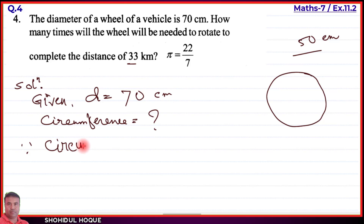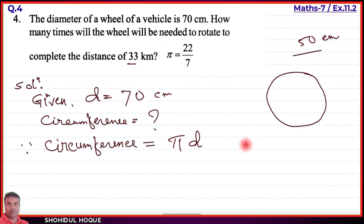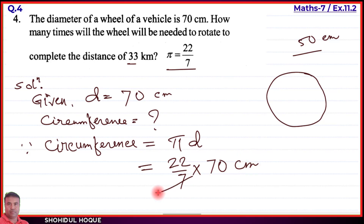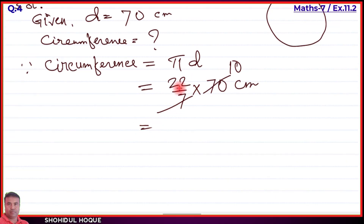Now applying the formula: circumference equals pi into diameter. Using pi equal to 22 by 7, and diameter equal to 70 centimeter: circumference equals 22 by 7 into 70. Cancelling 7 from 70 gives 10, so circumference equals 22 into 10 centimeter.